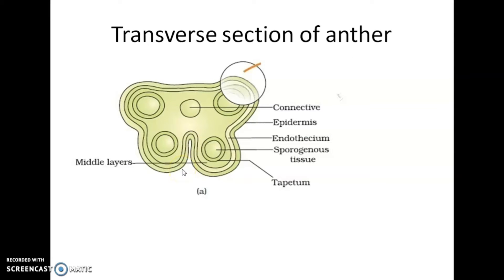This is the structure of microsporangium. In transverse section, a typical microsporangium appears circular in outline and it is surrounded by four wall layers. See, the first layer, second layer, the third layer, and the fourth layer. Inside we can see the microsporangium. Which are these four layers and what are their functions? The first layer is epidermis, followed by endothecium, the third layer is middle layer, and the fourth one is tapetum.